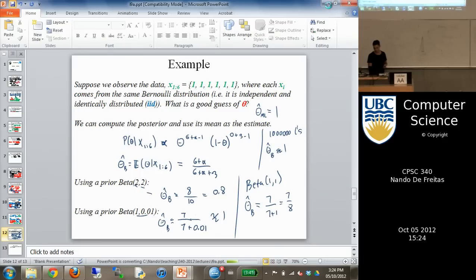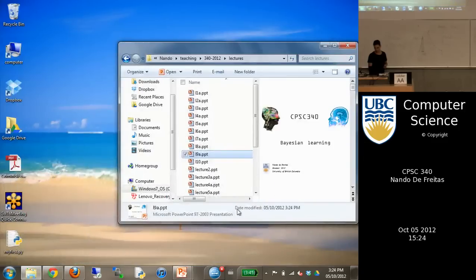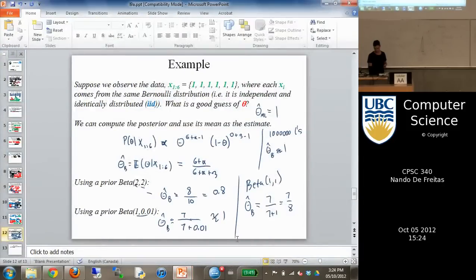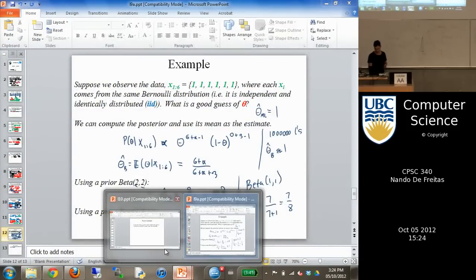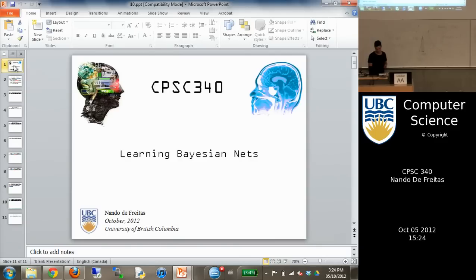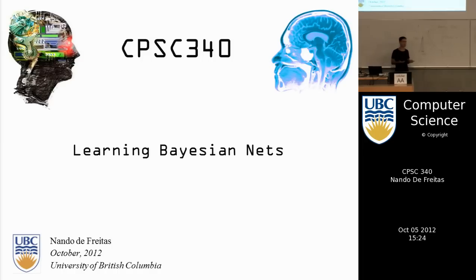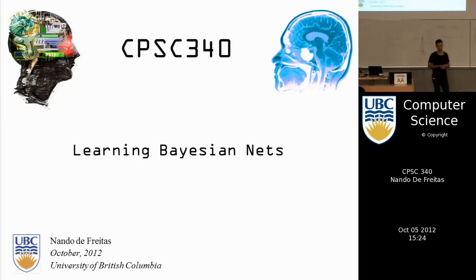Now let's see how to apply this to something more interesting than coins. No matter how big a graphical model is, if you're dealing with binary variables, you just need coin models to learn the parameters. I'm going to illustrate that with an example — first by maximum likelihood, then the Bayesian way.